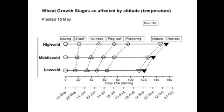Now let's look at the effect of altitude on the growth stages of wheat. Here again, we've got the days after planting, assuming a planting date of the 15th of May, and we've got three examples: high veld, middle veld, and low veld. The longest maturity of wheat is obtained on the high veld because it's much cooler compared to the low veld. So the temperatures on the high veld are cool, and the time to different growth stages is long.